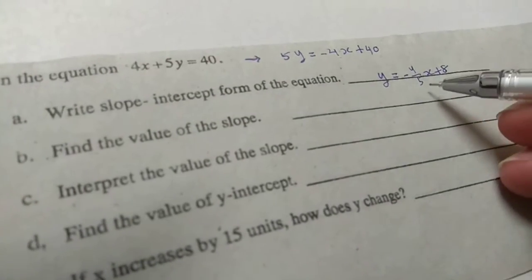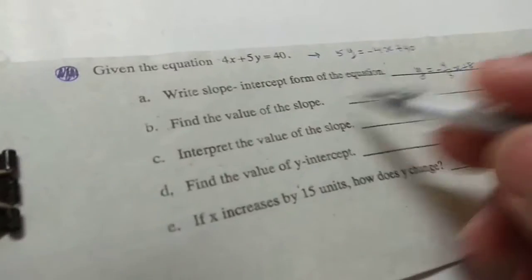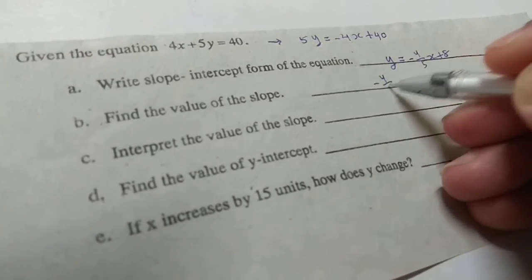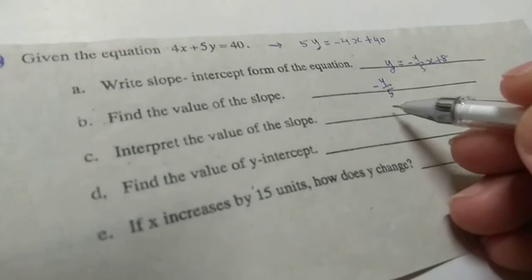So slope is negative 4/5, y intercept is 8. Therefore the value of slope is negative 4/5.